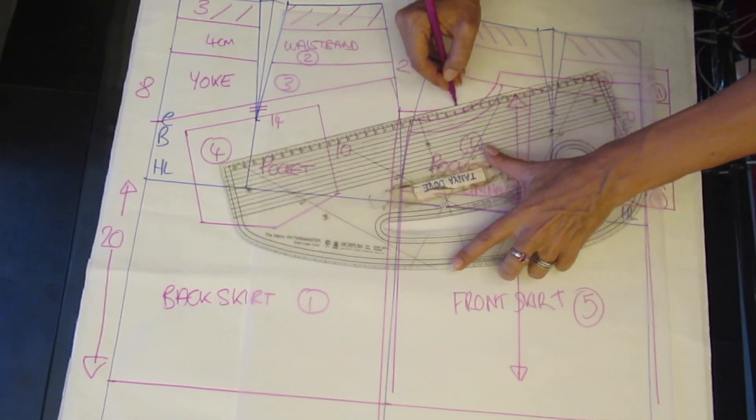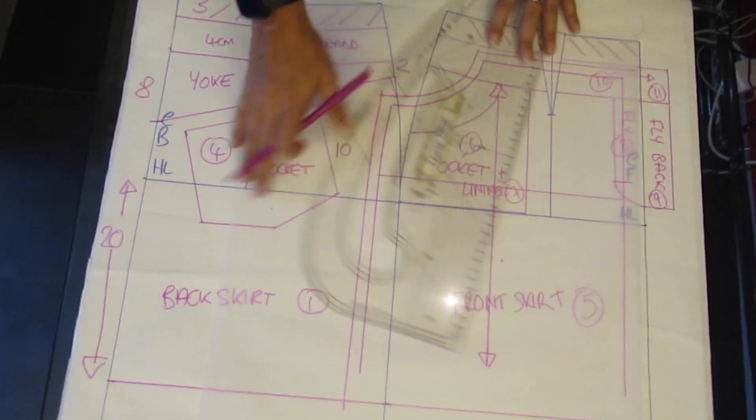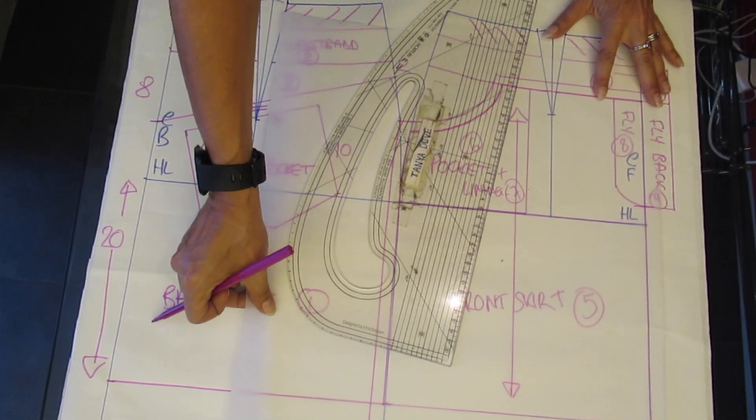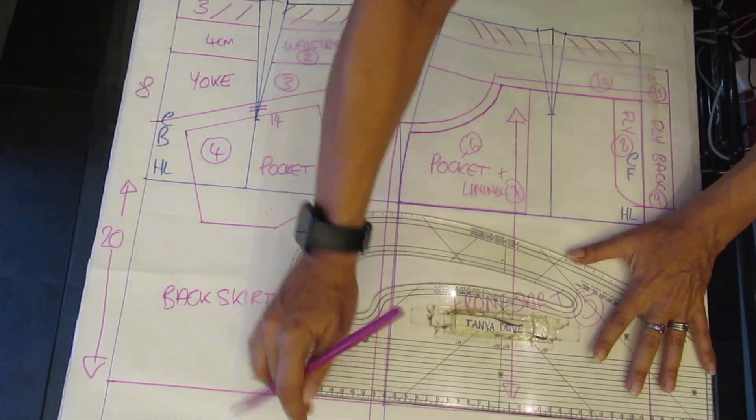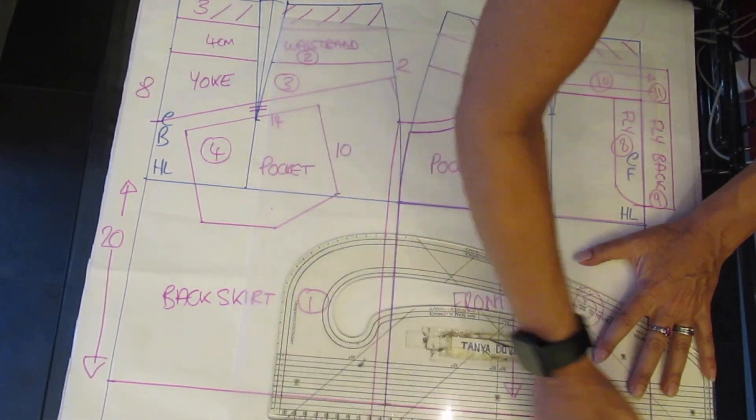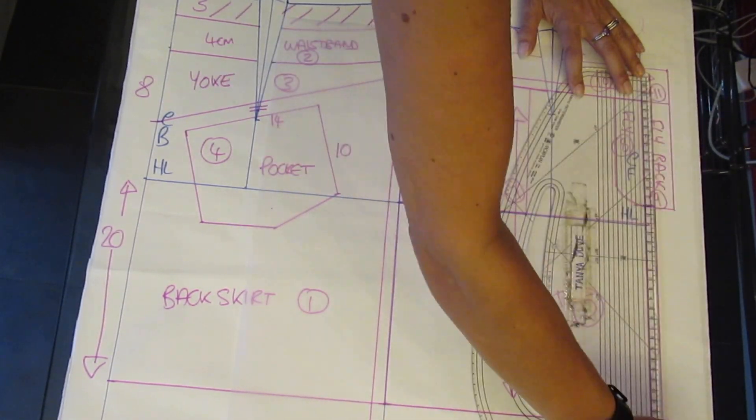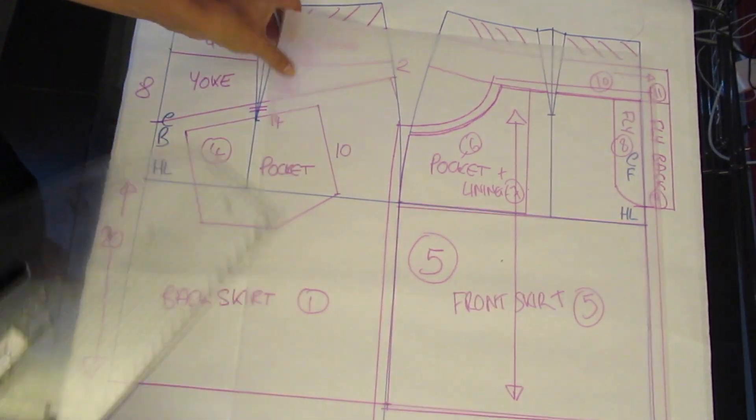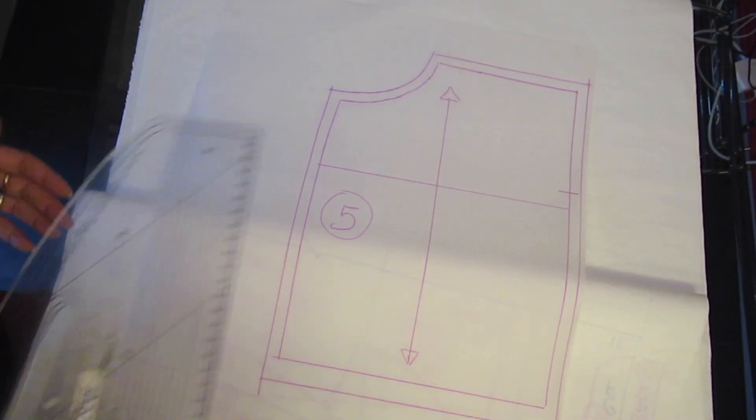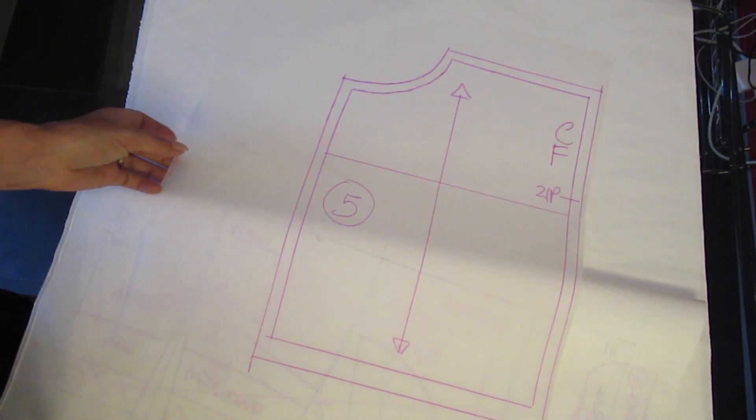Add in the seam allowance all around 1cm including the centre front edge. Your hem is 2cm also the same as the back added on to the bottom. Number your pattern piece and draw in your abbreviations and writing for the zipper notch.